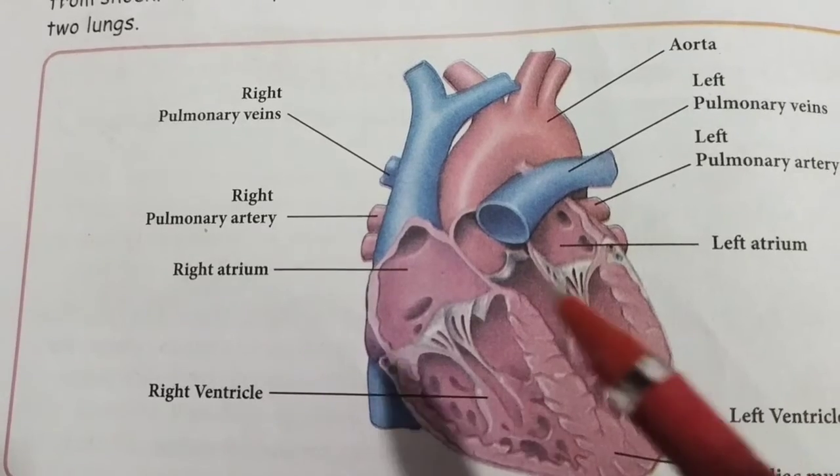So the circulatory system consists of the heart, blood vessels, and blood. Thank you.